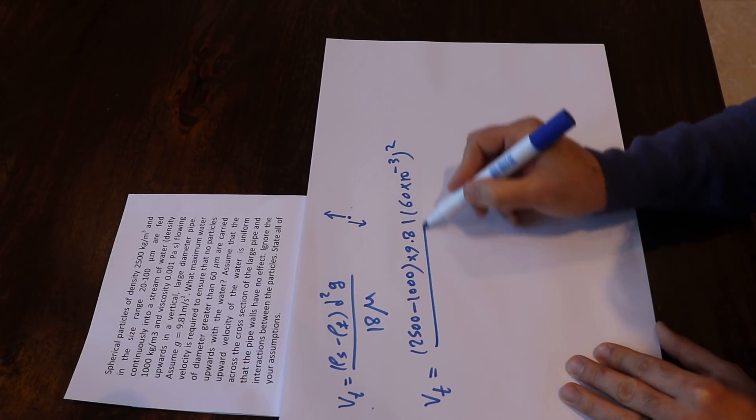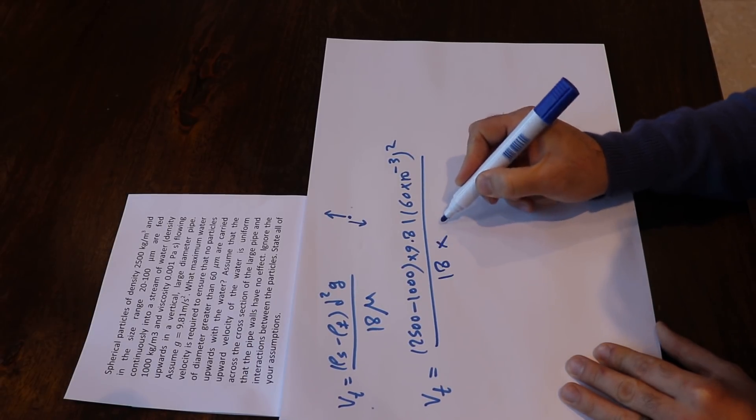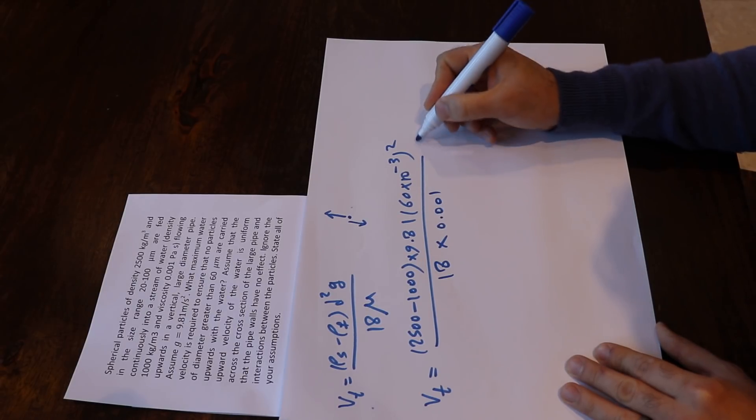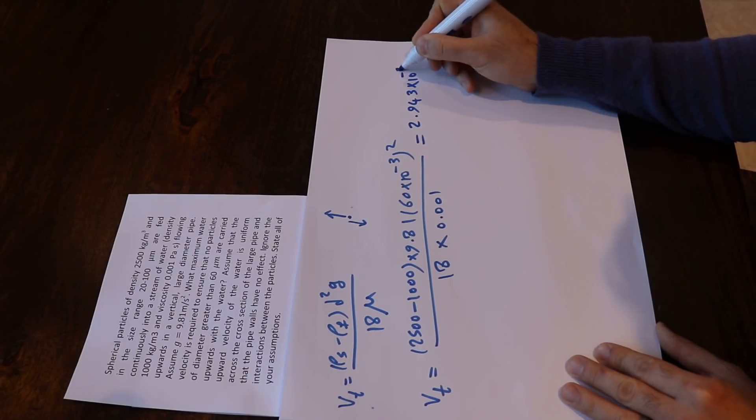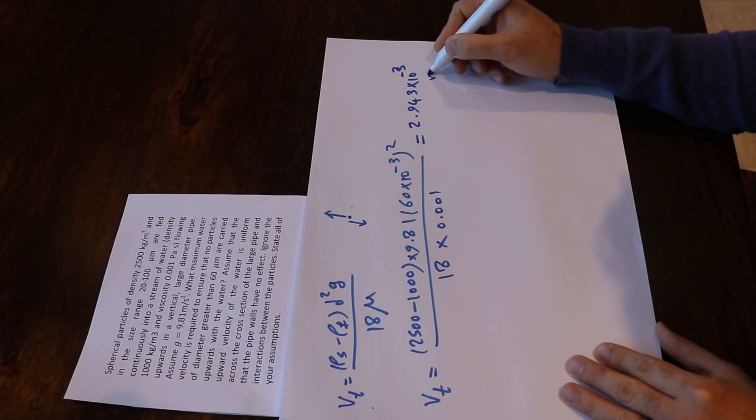That is the particle diameter, divided by 18 × 10^-3, and that will equal 2.943 × 10^-3 meters per second.